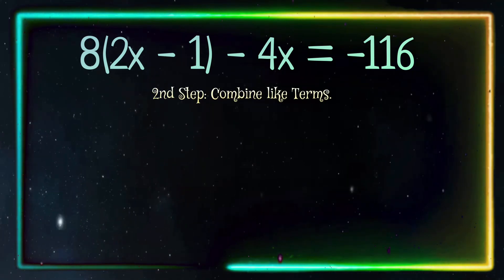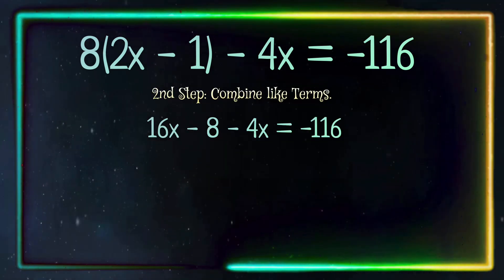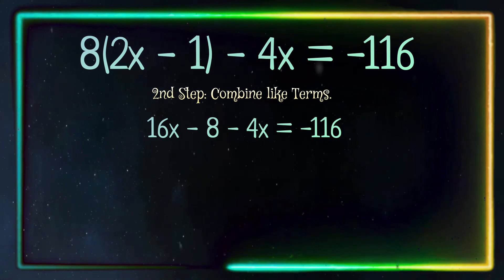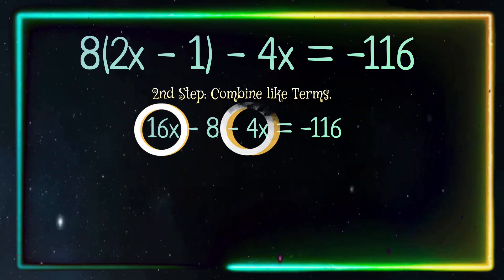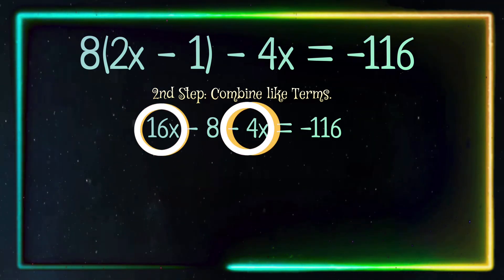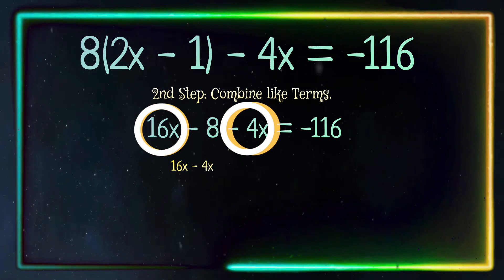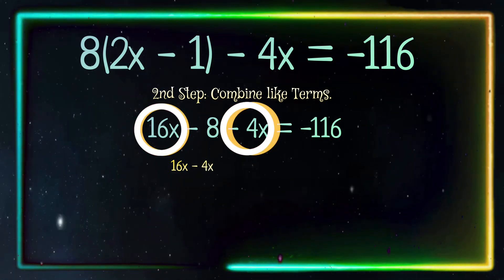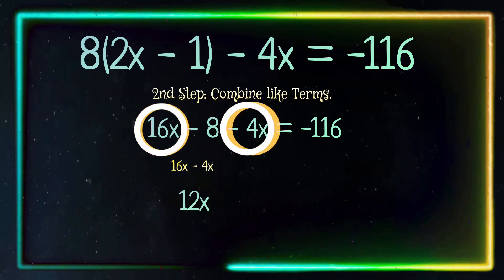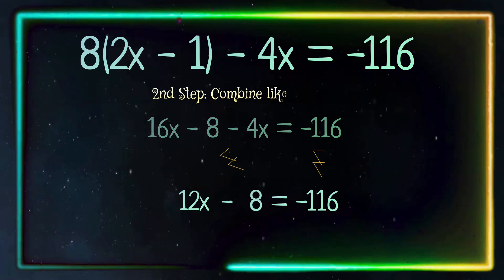Second step, let's combine like terms. We have 16x and negative 4x. 16 minus 4x equals 12x. We bring down the rest of the equation.